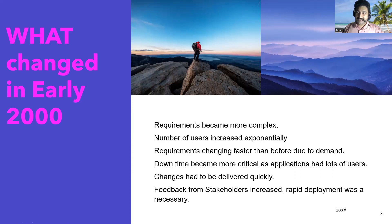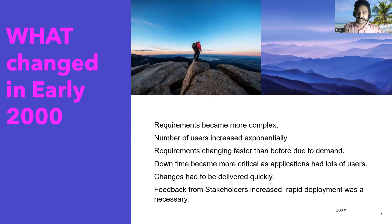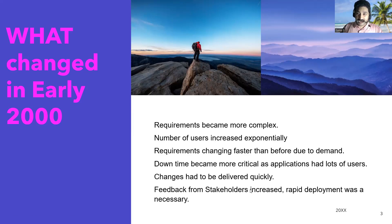As more people used the system, the load increased. Downtime became more critical — initially when only a few people were using a monolithic application, if the system was down for a day or two, not many were impacted. But as more and more people started using the application, downtime became very critical. Hundreds of thousands of people would call the bank saying the system is down.